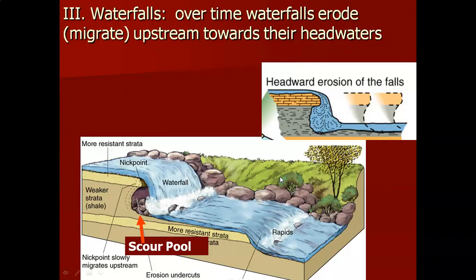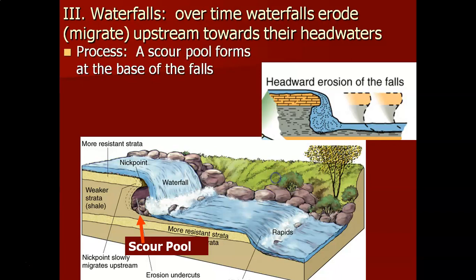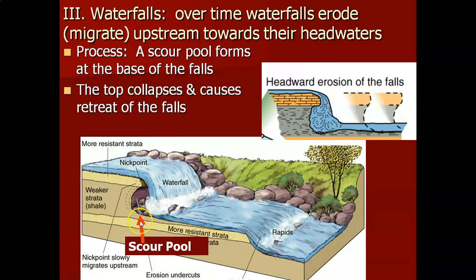The third topic is waterfalls. A big point about waterfalls is that they're not stationary — they actually move through time. A waterfall is really just a steepened gradient of the stream bed, usually due to some different rock geology or stronger rock structure. Once you have this steepened gradient, you get greater velocity of the water in the waterfall, which erodes the base of the fall, creating a scour pool and undermining the base.